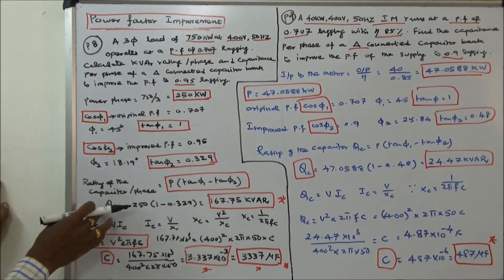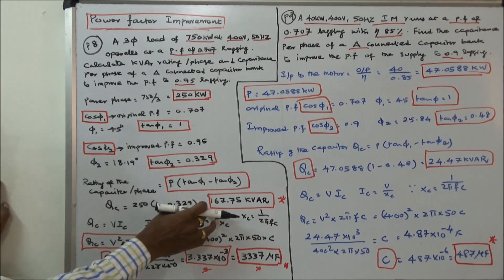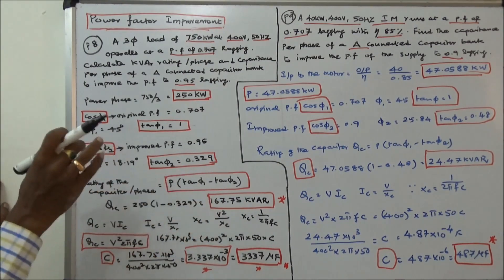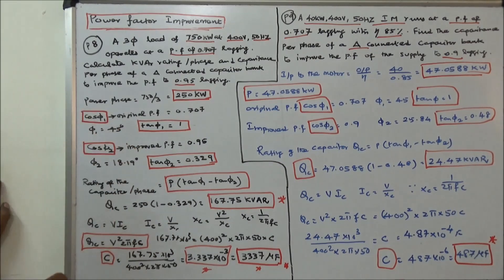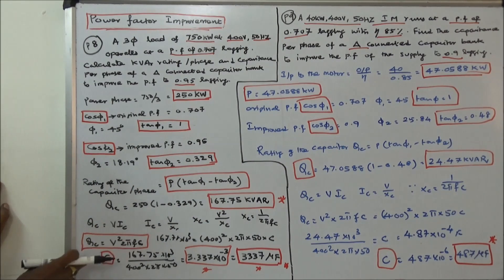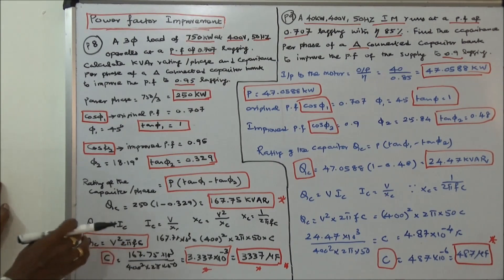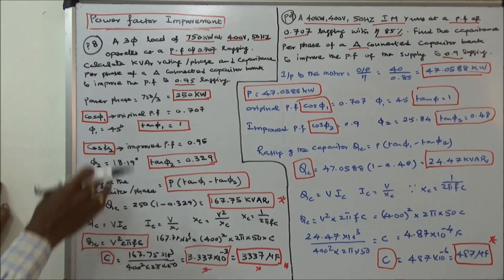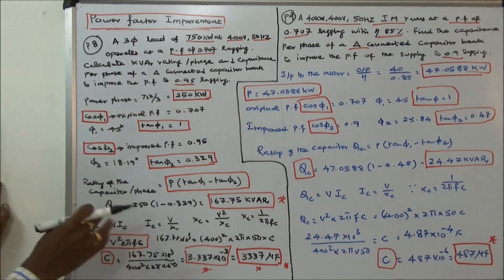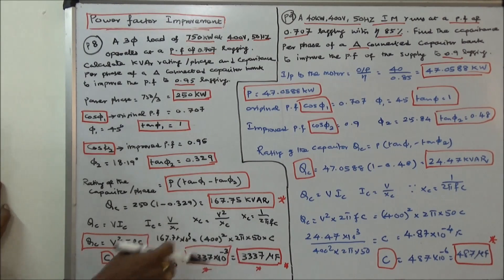We can calculate QC. QC is equal to 167.75 kVAR — that is the rating of the capacitor. QC is equal to V into IC, so QC is equal to V squared into 2π F C, where F is the supply frequency and V is the supply voltage. V is given 400, F is 50. We can calculate C. C is equal to 3337 microfarads.